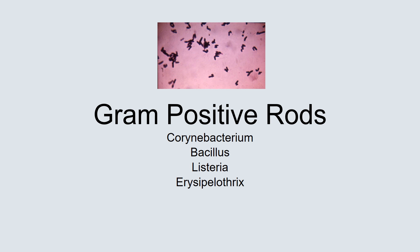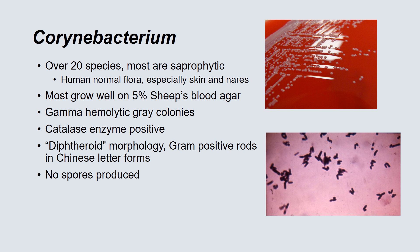Welcome to the second half of the lecture on bacteriology. Today we're going to talk about gram-positive rods, gram-negative rods, and then move into anaerobic bacteriology. Let's get started with Corynebacterium. There are over 20 species. Most of these are saprophytic organisms; they're part of the human normal flora, especially skin and nares.